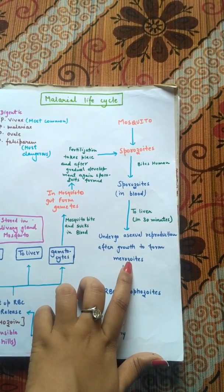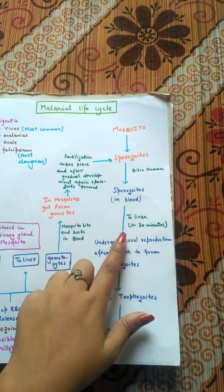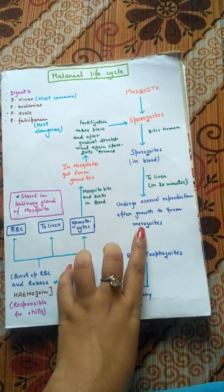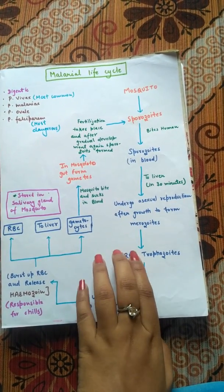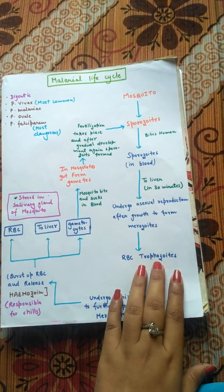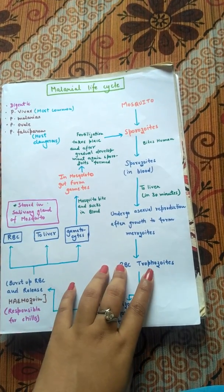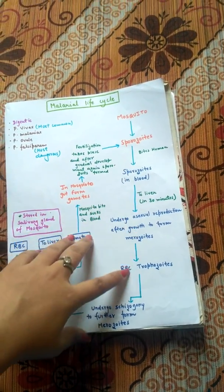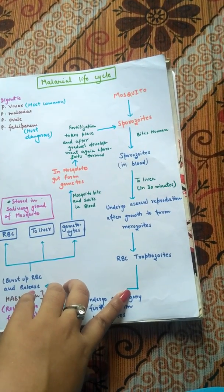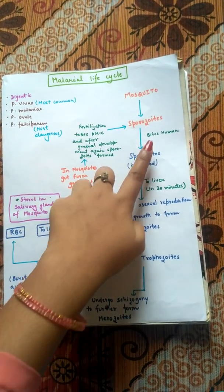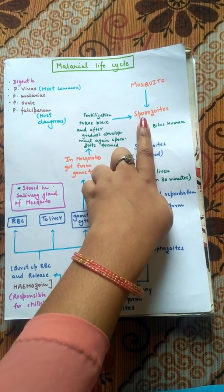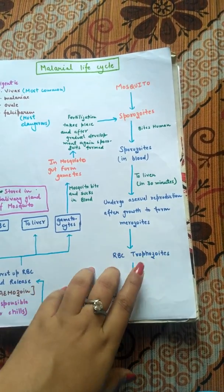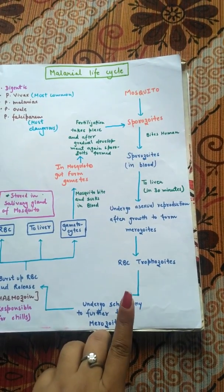After the formation of merozoites in the liver, these stages then go into the RBCs in the blood. This next stage is known as trophozoites. So there are three stages so far: sporozoites, merozoites, and trophozoites — all happening inside the human body. The blue color in the diagram represents the life cycle of Plasmodium inside the human body, and the orange color represents the life cycle inside the mosquito.